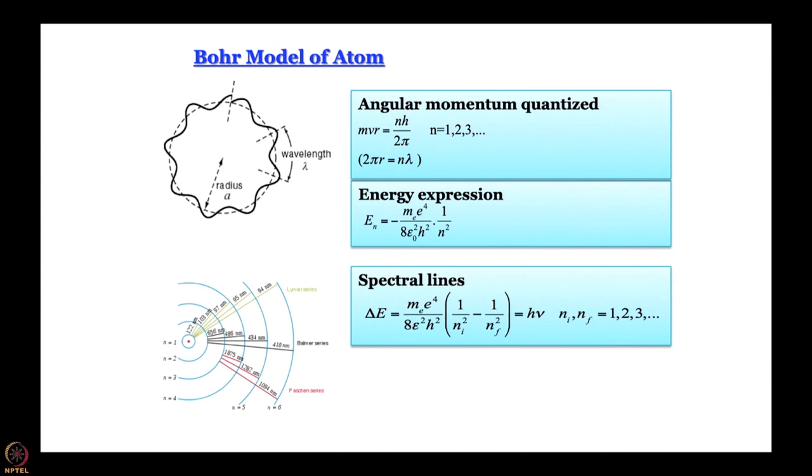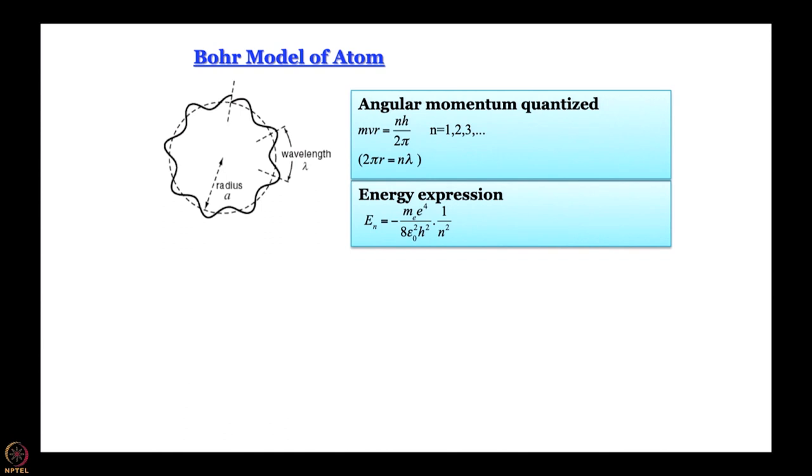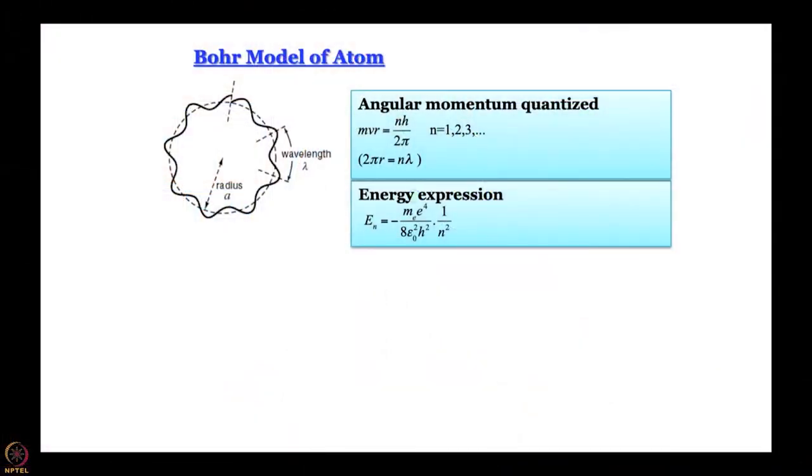Also, what Bohr could do is work out a precise expression for the radius. Precision and precise values of all these quantities is the hallmark of Bohr theory, and as we will come to later on, this is both the strength and the weakness of the theory.